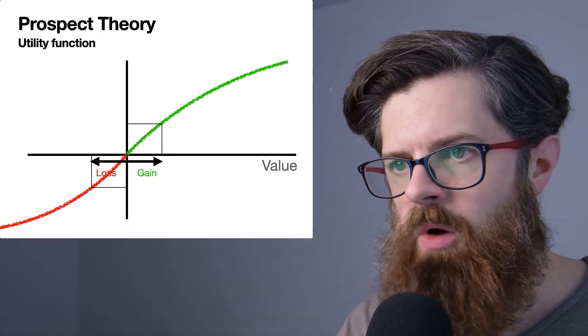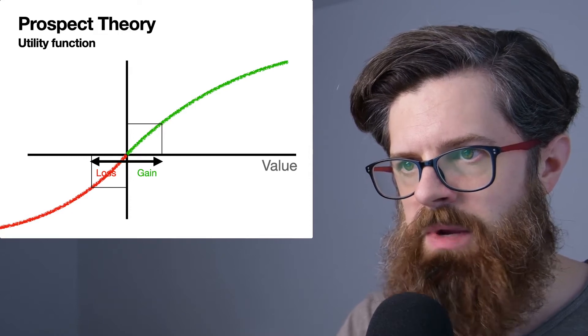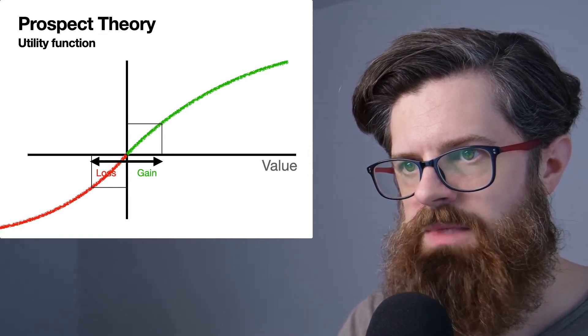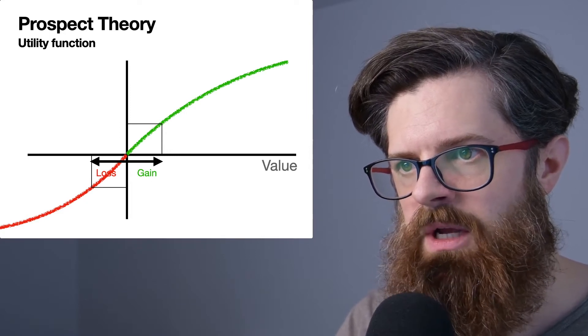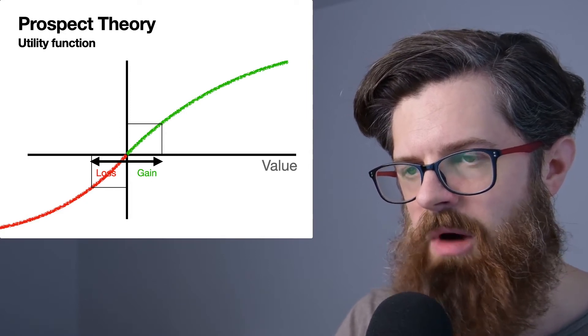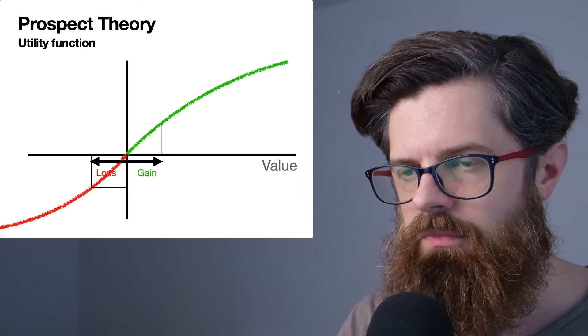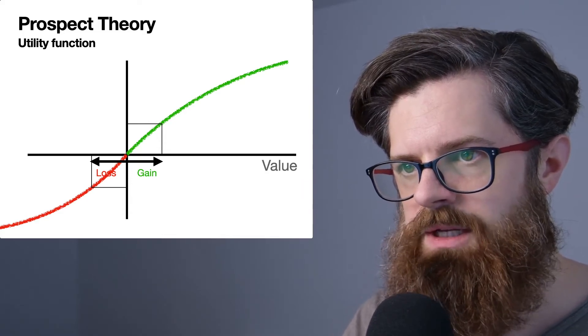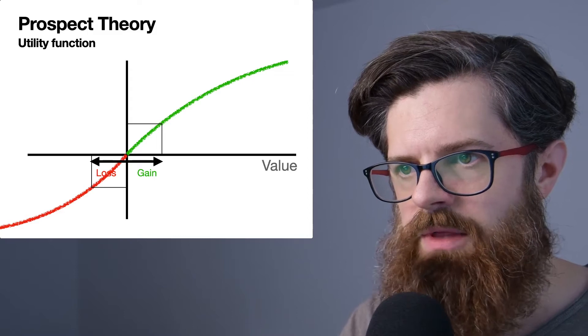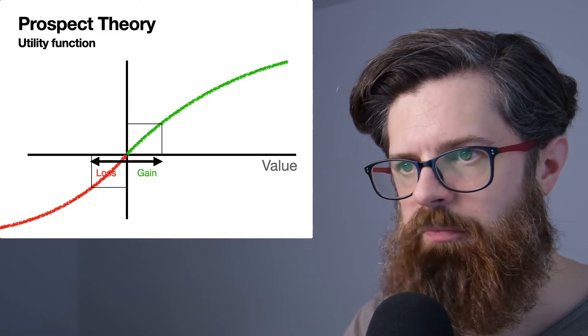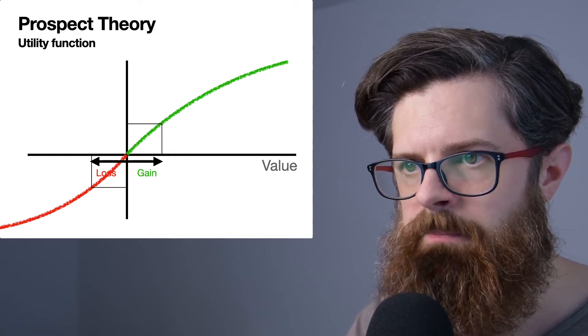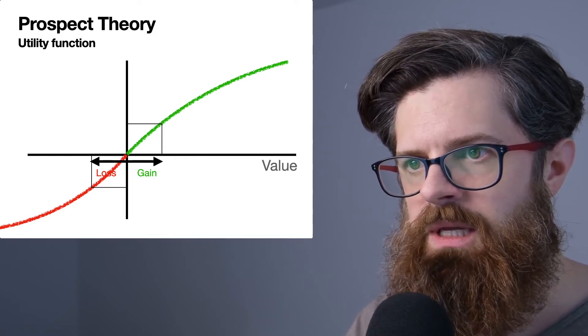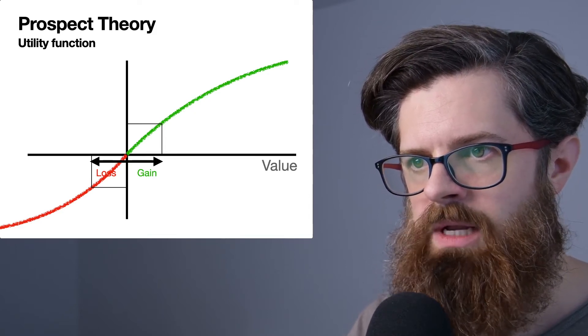So what we can see here is a depiction of our subjective value function, our utility function according to prospect theory. We're going to make a few changes. On the x-axis we have our value, which might correspond to an absolute amount of reward such as money.